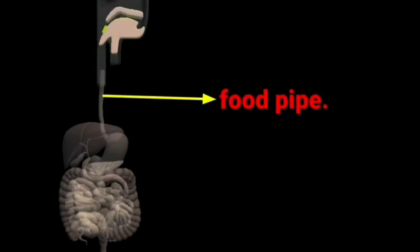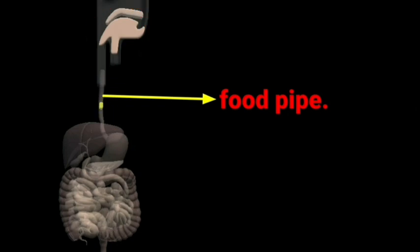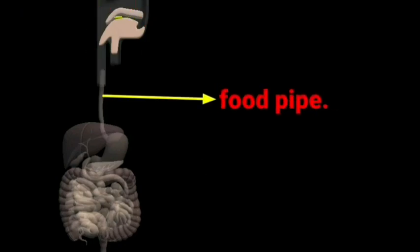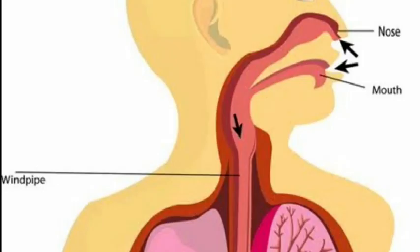The chewed food that enters the esophagus from the mouth and is passed down to the stomach is called bolus. Our wind pipe and food pipe run adjacent to each other. Air and food share a common passage in the throat. When we swallow food, a flap-like valve closes the passage of the wind pipe and guides the food into the food pipe. But if we laugh or talk while eating, the wind pipe remains open and food particles enter the wind pipe, causing hiccups, cough or choking.